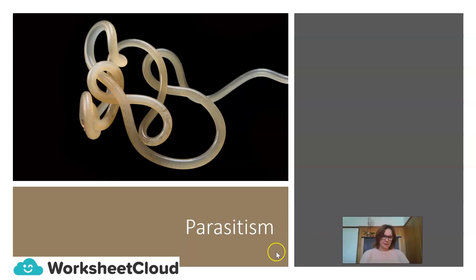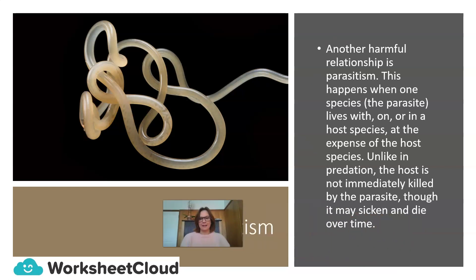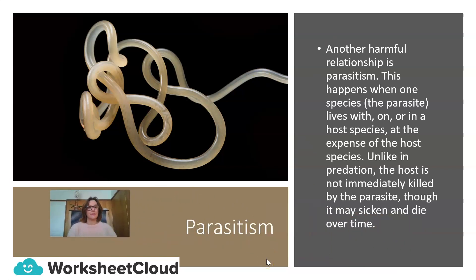Our next symbiotic relationship is parasitism. Another harmful relationship is parasitism. This happens when one species — the parasite — lives with, on, or in a host species, at the expense of the host species. Unlike in predation, the host is not immediately killed by the parasite, though it may sicken and die over time.